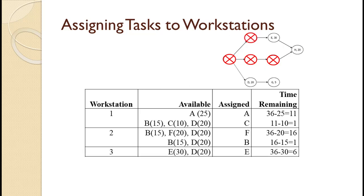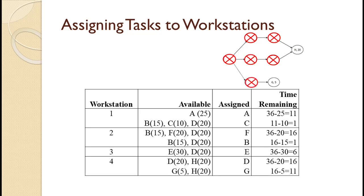At this point, E and D can be assigned. Using the longest processing time again, we select E. That leaves 36 minus 30 equals 6 seconds — not enough time to assign another activity — so we move to the next workstation. At this point, D and H can be assigned, and longest processing time is a tie, so we select D because it has more followers. That leaves 36 minus 20 equals 16 seconds. At this point, G and H can be assigned, but there is only enough time to assign G. That leaves 16 minus 5 equals 11 seconds and we move to the next workstation. Only H is left, so it is assigned to workstation 5, leaving 36 minus 20 equals 16 seconds.